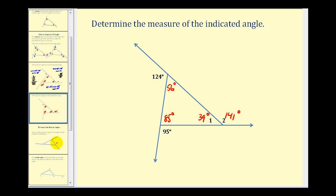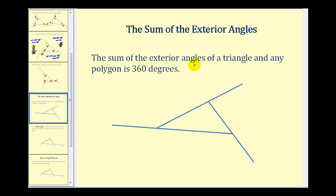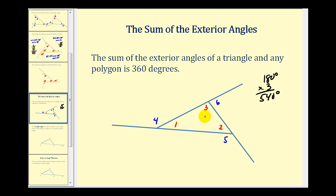Let's talk about a couple of theorems that involve exterior angles, which we'll prove in the next couple of videos. The sum of the exterior angles of any triangle — as well as any polygon — is always 360 degrees. The interior and exterior angles form three linear pairs, so the sum of angles one through six is 180 times 3, which is 540 degrees. Subtracting the sum of the interior angles, which is always 180 degrees, we always get 360 degrees for the exterior angles.